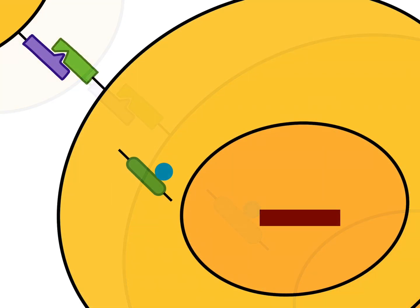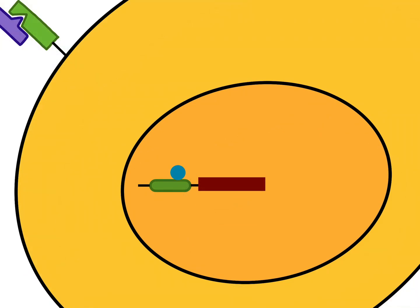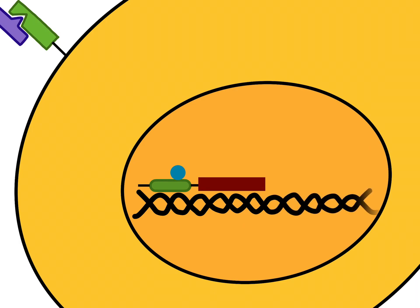Thus, it binds to the transcriptional factors and forms a transcriptional complex which binds to DNA of a gene, letting out an inhibitory signal to the gene which promotes differentiation.